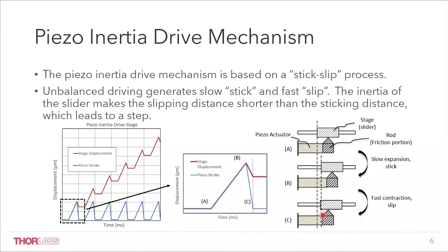The slider's inertia from phase A to B will keep it moving forward. This inertia causes relative motion between the rod and the slider, resulting in a slipping process.